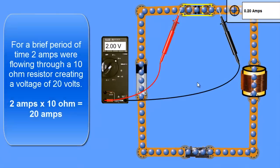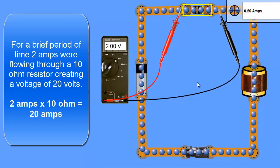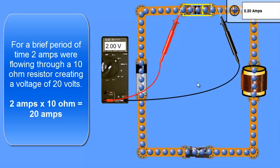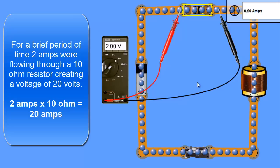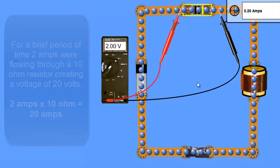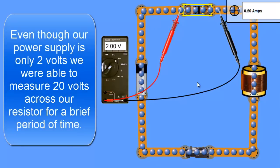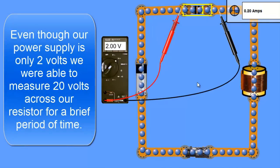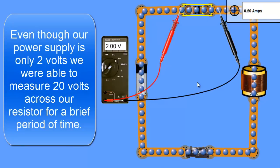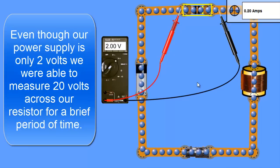So Ohm's Law is holding now, but for a brief period of time we had a 2 volt battery as the highest voltage that we had in the circuit. But we were able to pull 20 volts from that circuit for a short period of time. And that's the interesting property of inductors.